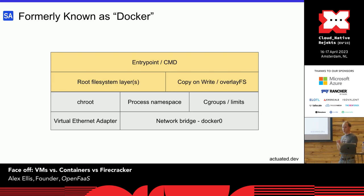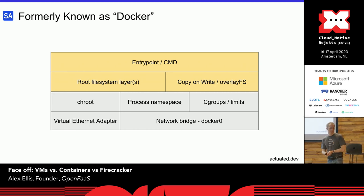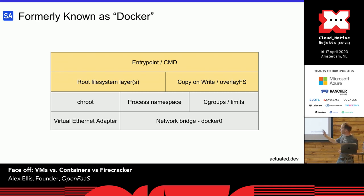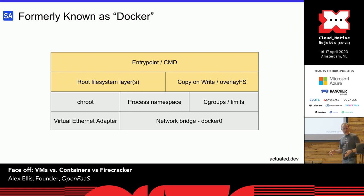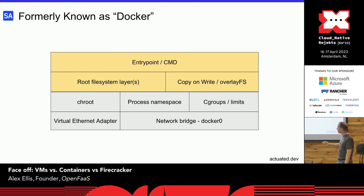The entry point is the program we're going to run. In a container we don't need systemd — in fact you can't really even run it properly without privileges. You have your root filesystem layers, copy-on-write, and chroot in the Linux kernel, which pins you at a directory and doesn't allow you to go any higher. We get a process namespace, cgroup limits to constrain RAM and CPU consumption, and then some kind of Ethernet bridge. That's really what we're thinking about as a container.